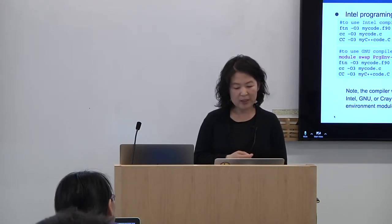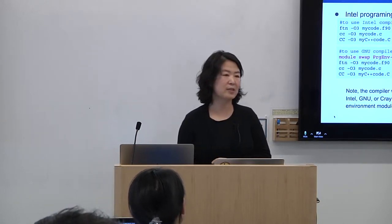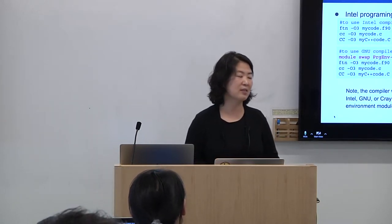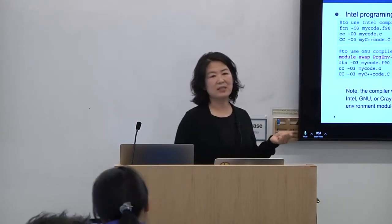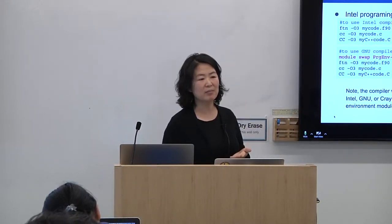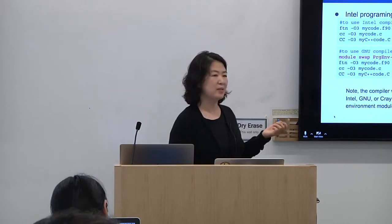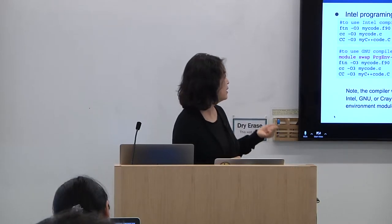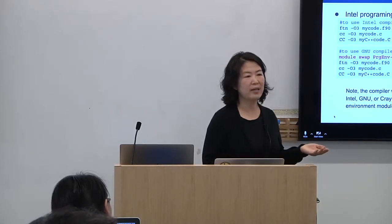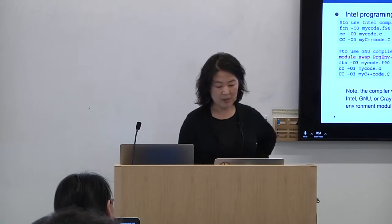One thing I want to mention: some users were confused and thought the compiler wrappers FTN, CC, and CC are the actual compilers, but they are not. They are just wrappers that wrap the native compilers. They can wrap Intel, GNU, and Cray compilers. The wrappers themselves are not equal to Cray compilers.